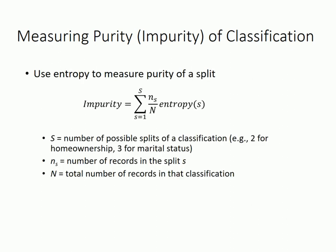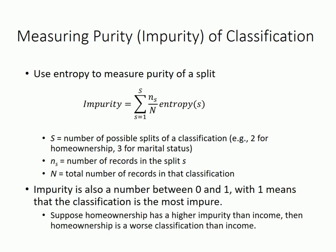We can then measure the impurity of the classification using this formula. Here, capital S is the number of possible splits of a classification — it will be 2 for income, for example. N_s is the number of records in split S — for example, N_s is 5 for the low-income split. N is the total number of records in the data we are trying to classify. Impurity is also a number between 0 and 1: 0 means that the classification is pure, while 1 means that the classification does not tell you anything at all about whether a client defaults or not.